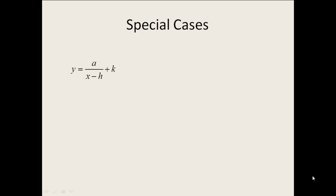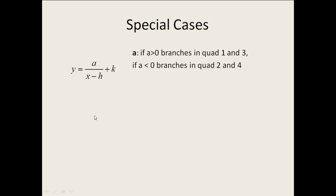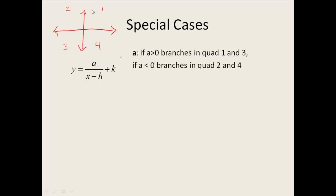We have two special cases we're going to be working with today. Our first one has the form y equals a divided by the quantity x minus h, plus k. Now a, h, and k will all be numbers, and they each do particular things. If a is greater than 0, your branches of your graph are going to be essentially in quadrants 1 and 3. Remember our quadrants start in the top right corner and go counterclockwise. If a is less than 0, then we're going to get our branches in quadrants 4 and 2.